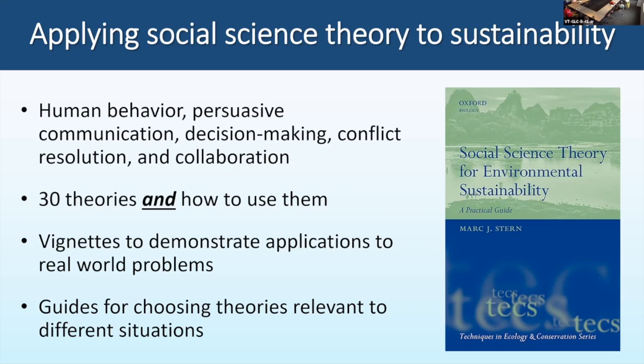So it might be: I want to get people to recycle—something pretty simple. Here are three theories you might use, and if you use them you have a better chance of achieving that end than if you just go from intuition. There are about 30 chapters, all super short, and then vignettes at the end—like, Caleb lives here and has this problem, here's how he takes six theories and comes up with a strategy, and here's what happens. It's all about trying to help practitioners see the value in this.